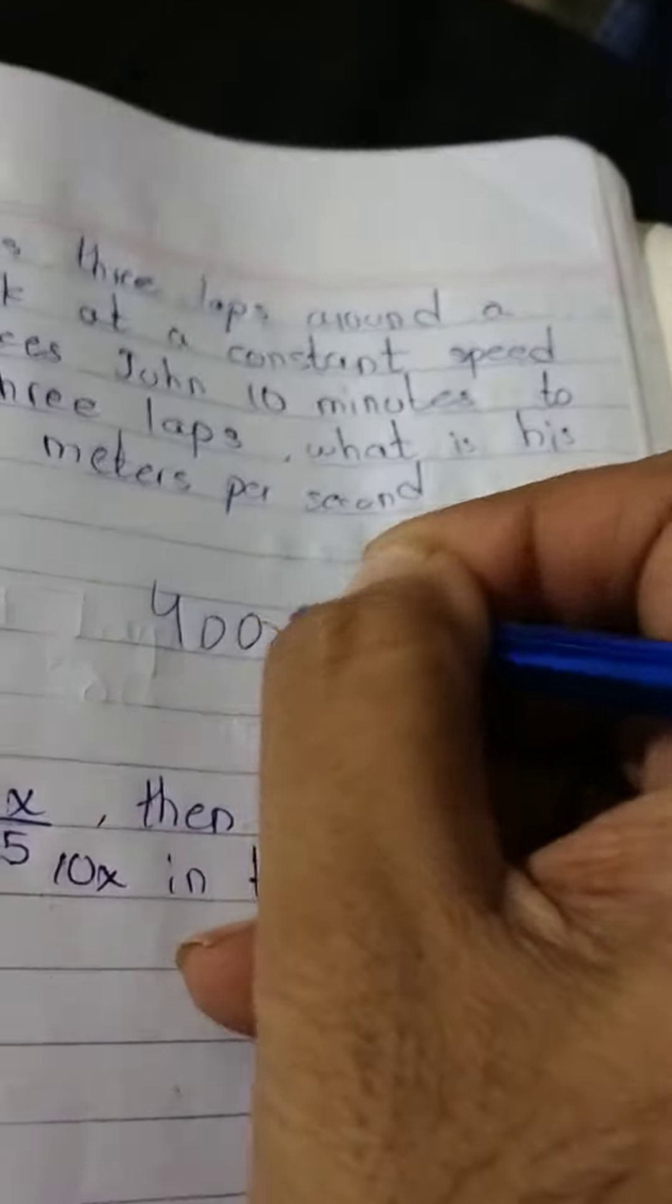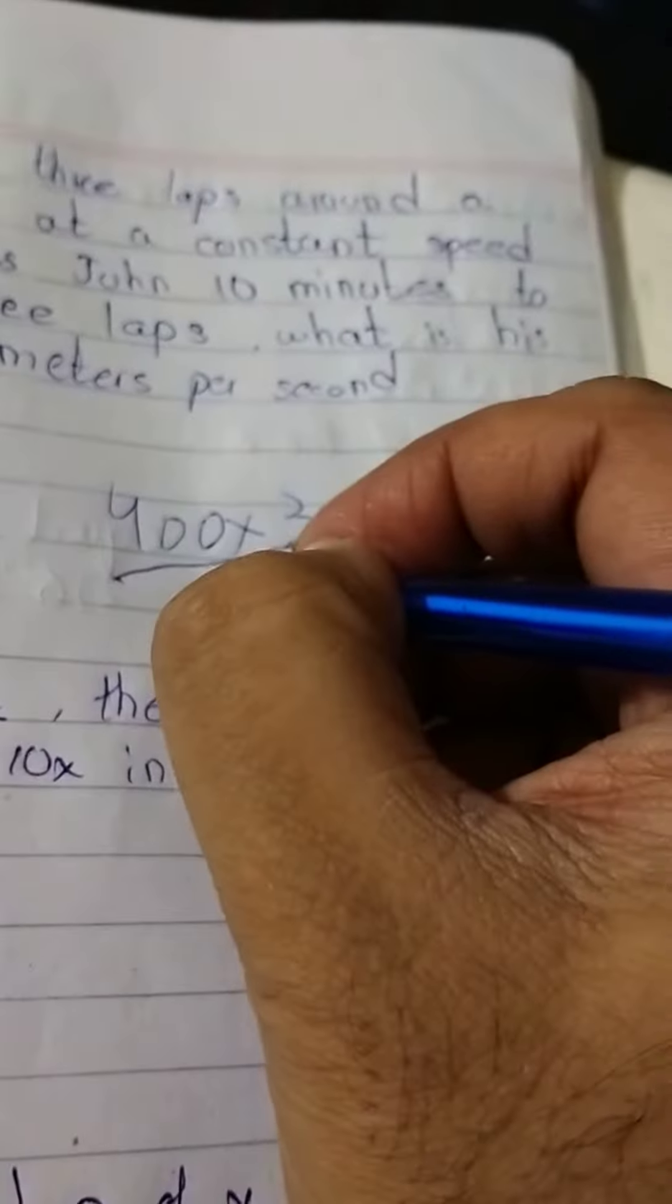Look, he's doing 400 meters in three laps. How long he's doing? In 10 minutes.